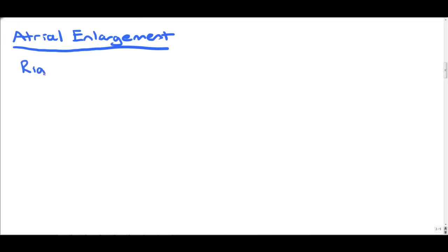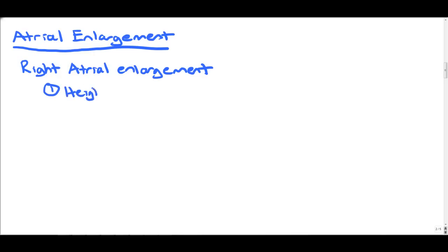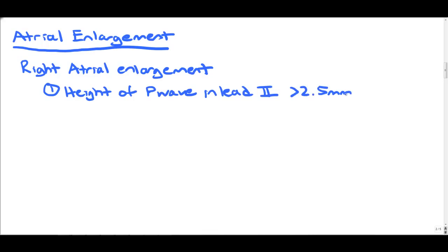To understand atrial enlargement, you have to understand the criteria used to define either right or left atrial enlargement. Starting with right atrial enlargement: in lead 2, a P-wave height greater than 2.5 millimeters (2.5 boxes) is indicative of right atrial enlargement. Additionally, a P-wave height in lead V1 greater than 1.5 millimeters is also indicative. But lead 2 is really our key — height greater than 2.5 millimeters.